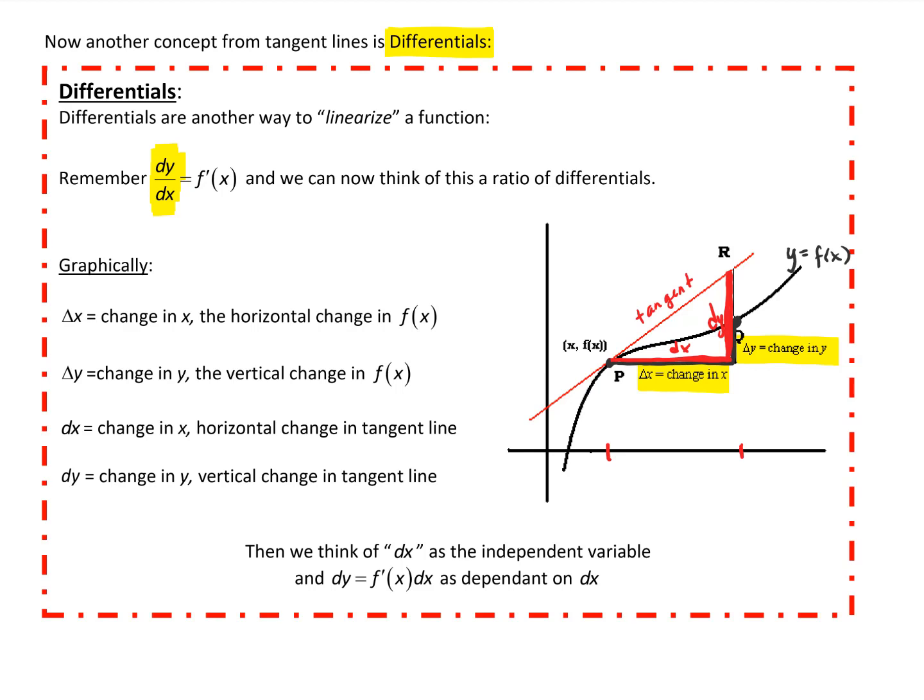As we get further away from point p, the gap between the tangent line and the actual curve gets wider. We can see that — it's the difference between delta y and dy. There's quite a gap in this particular scenario, and as we move further, that gap widens.